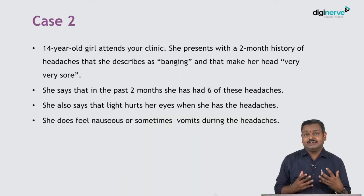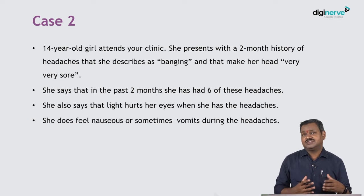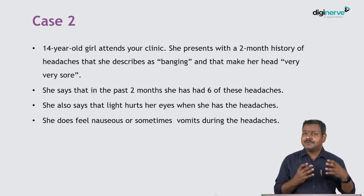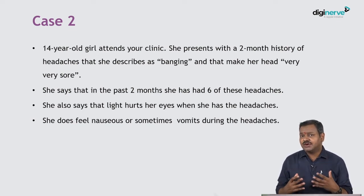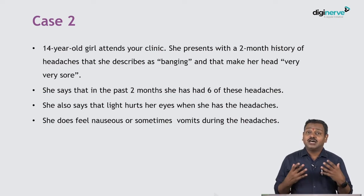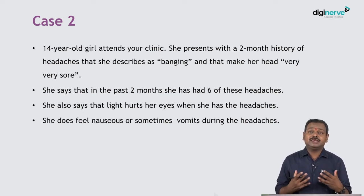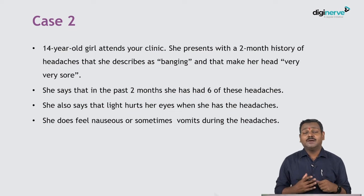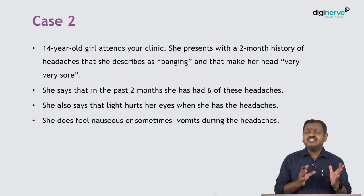In the first case scenario, a young male with associated eye symptoms — redness, tearing, nasal congestion — suggests a possible cluster headache. In the second case scenario, a young female with episodic headache associated with aura, nausea, and vomiting with multiple episodes is most consistent with migraine. These are common scenarios you would encounter in practice.